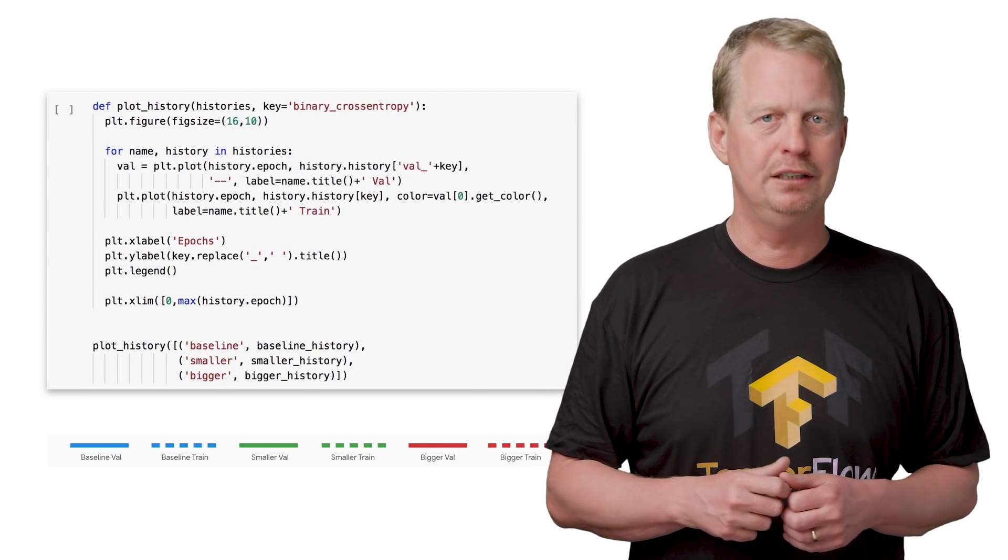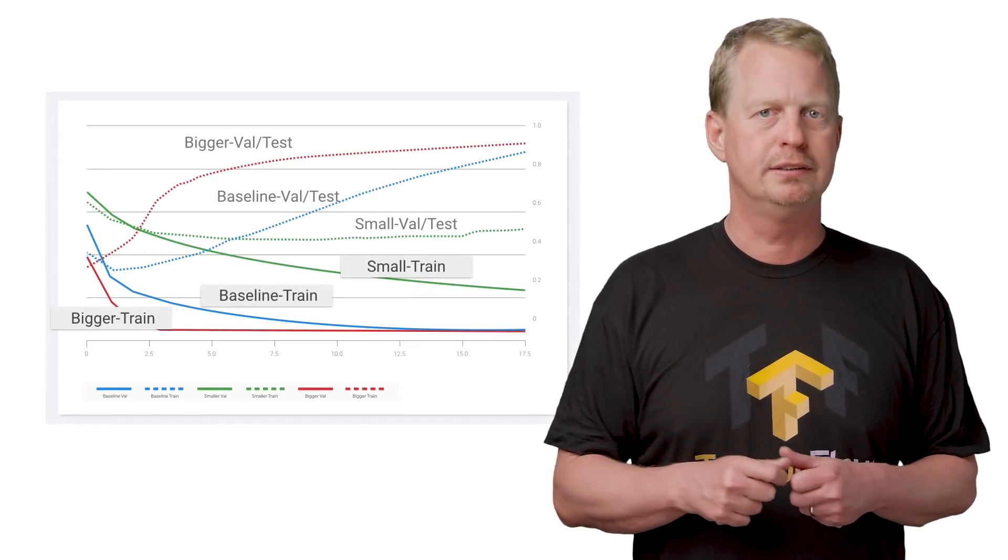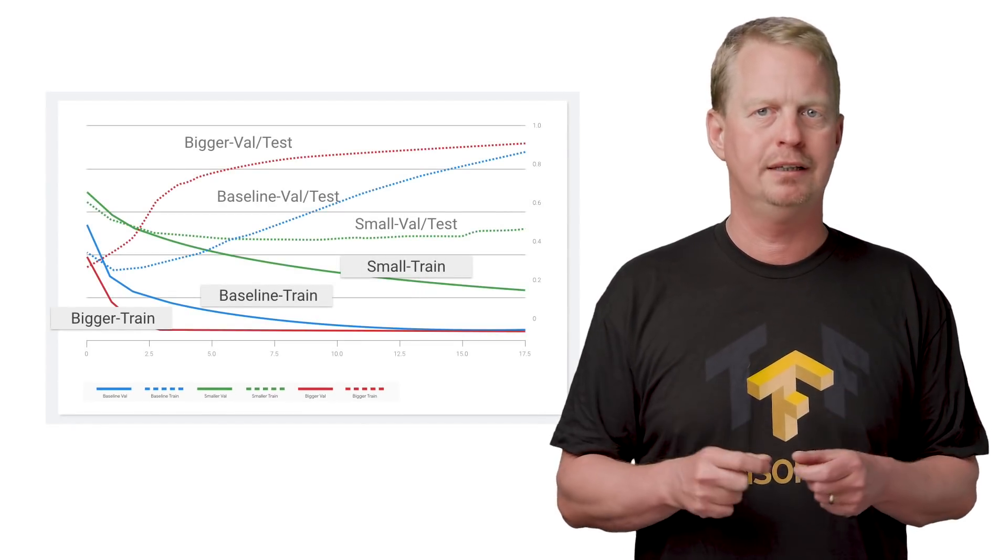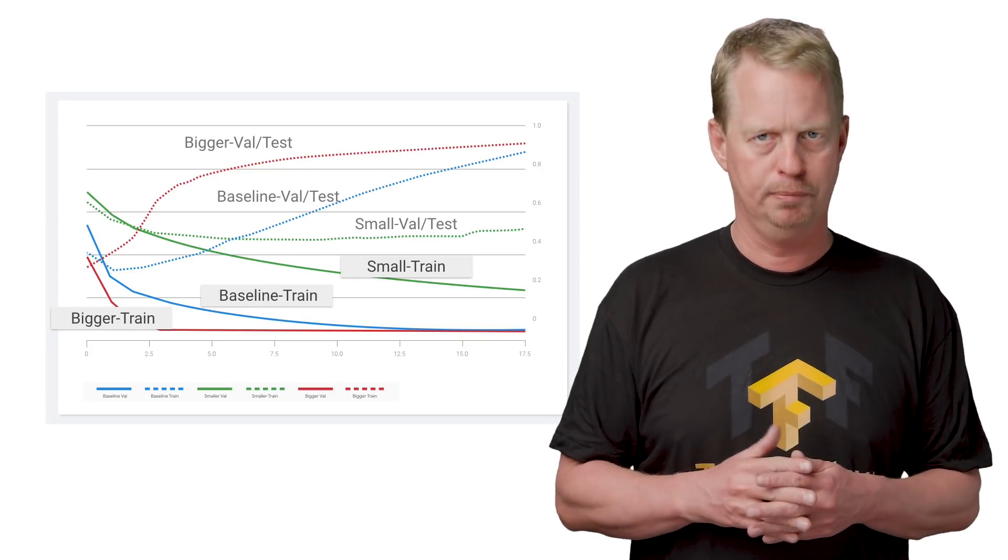All right, now for the interesting part, comparing how these models perform. As you can see, the training loss for baseline and bigger quickly decreases, while it takes much longer for the small model.